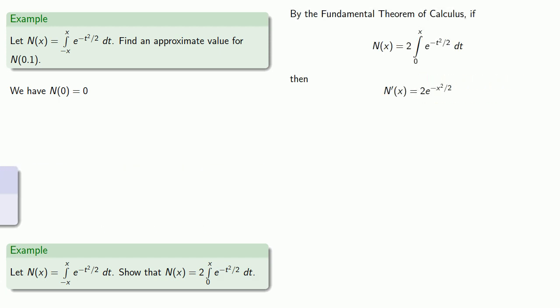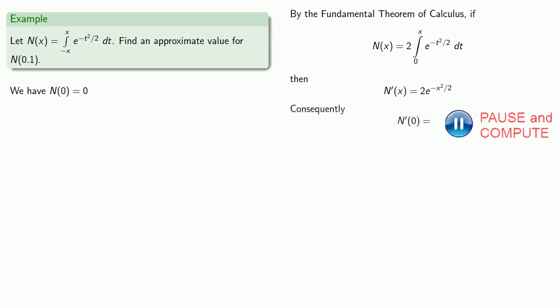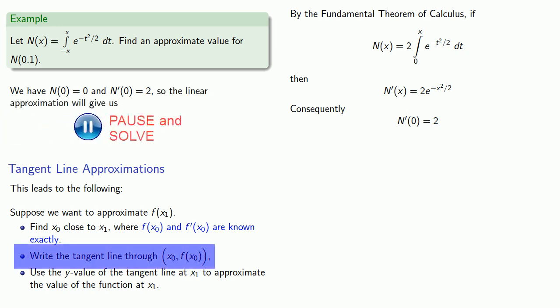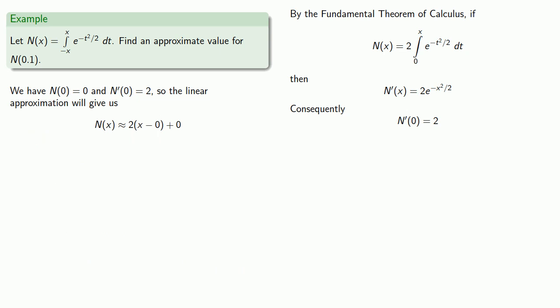And that tells us that n prime of 0 is equal to 2. And so now I know the function value, I know the derivative, so now I want to write the equation of the tangent line. And if I want to approximate n of 0.1, it's going to be...